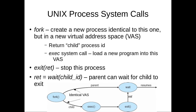Wait is a system call that a parent can execute that effectively blocks it — puts it onto a blocked queue associated with the child. This is effectively taking the parent, which was running when it executed wait, into a waiting or blocked state because we are waiting for the child. What are we waiting for? We're waiting for the child to execute exit. By executing exit, the child signals it's terminating, and that triggers the parent to be able to continue execution.